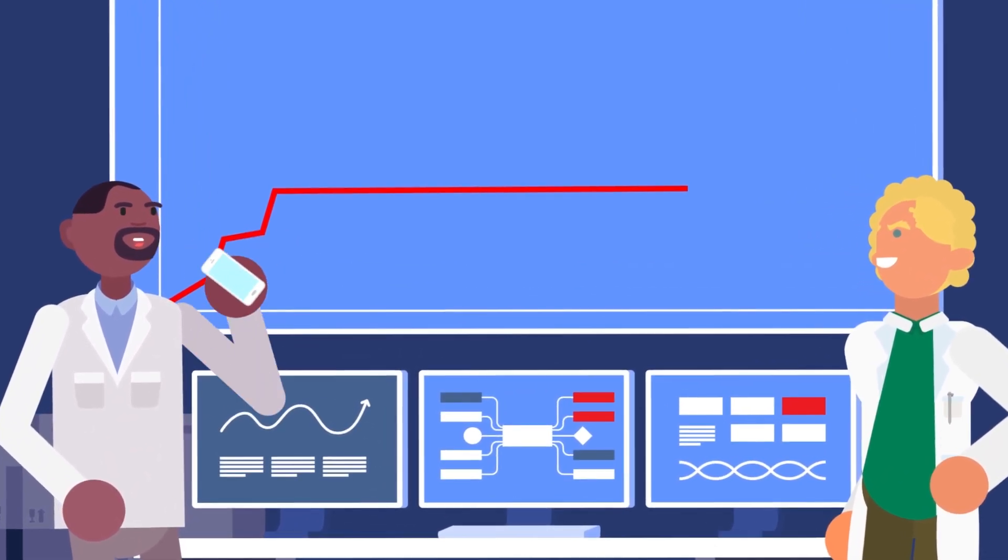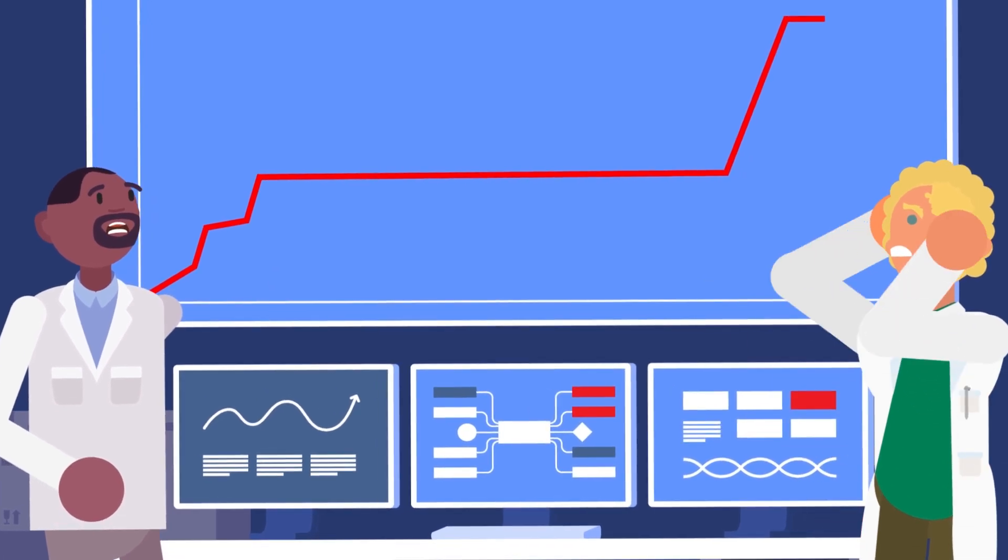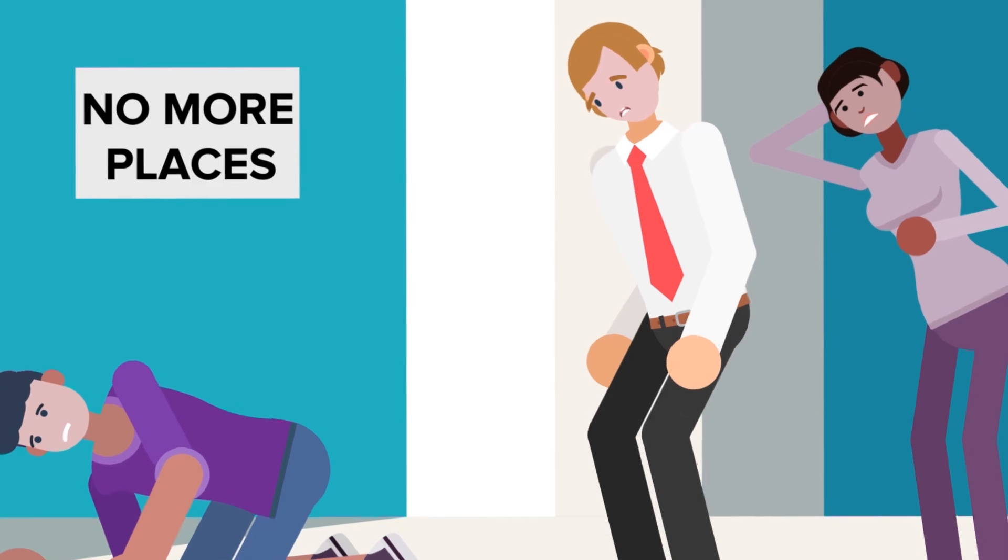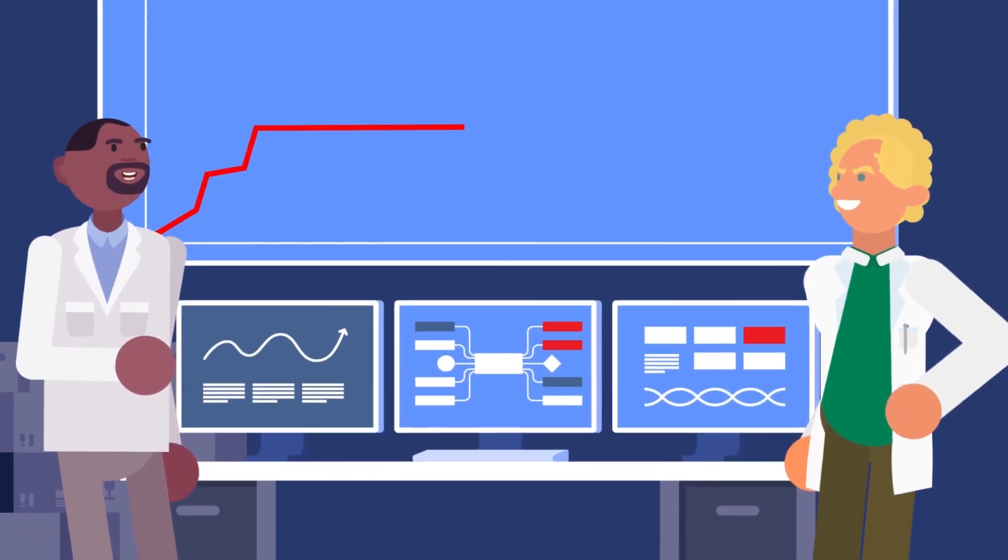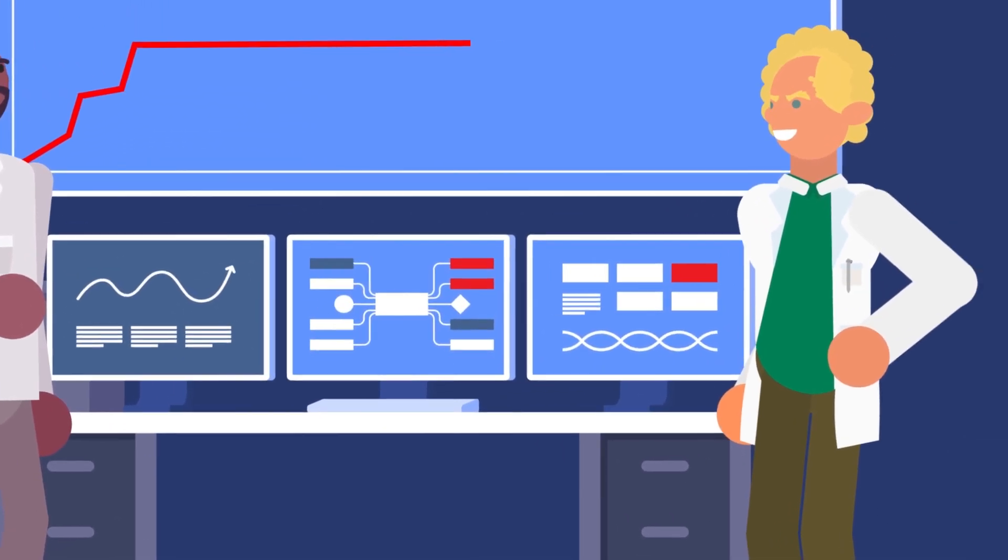If the cases spike massively in a short period of time, while the pandemic will technically be over earlier, it will overwhelm the healthcare system and cause much larger death tolls. In other words, the longer the disease lasts, the better off everyone involved will be.